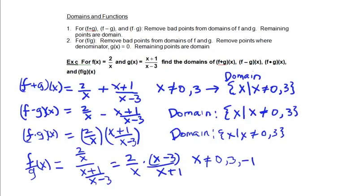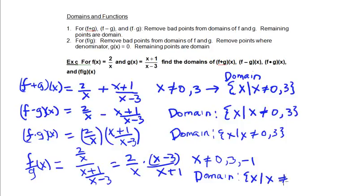That point is undefined so it's eliminated from the domain. We can write this domain more formally as the set of x values such that x is not equal to 0, positive 3, or negative 1.